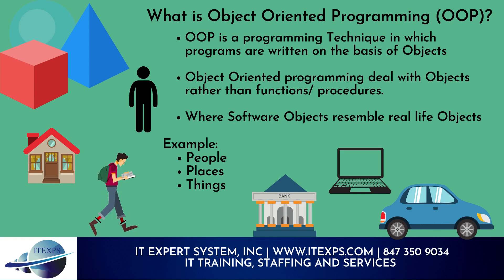Question: What is Object-Oriented Programming (OOP)? OOP is a programming technique in which programs are written on the basis of objects. Object-Oriented Programming deals with objects rather than functions or procedures, where software objects resemble real-life objects. Examples: people, places, things.